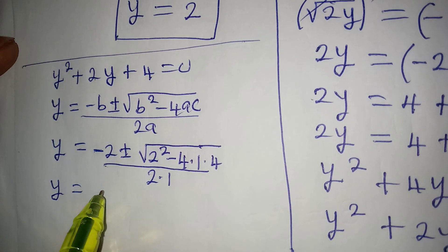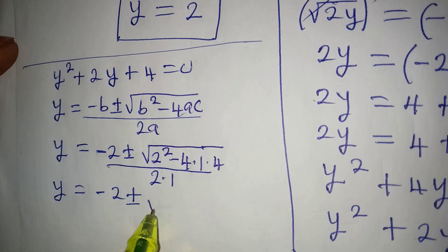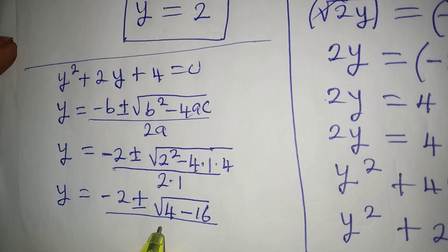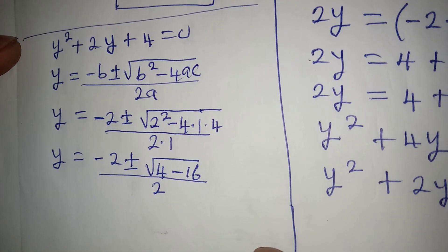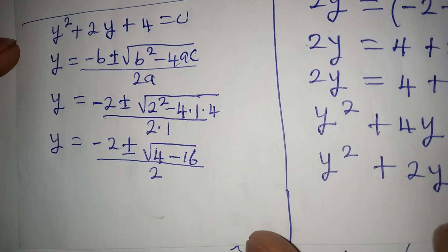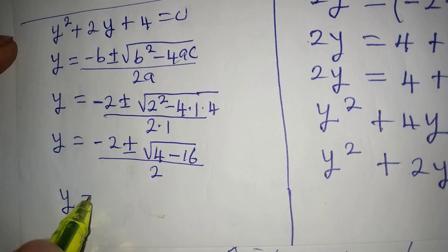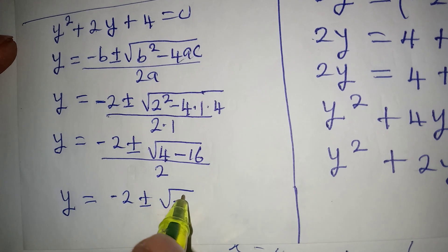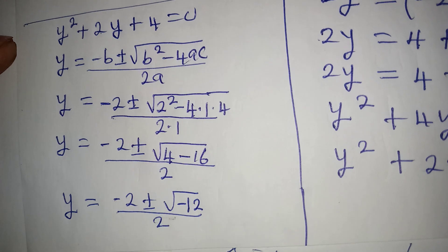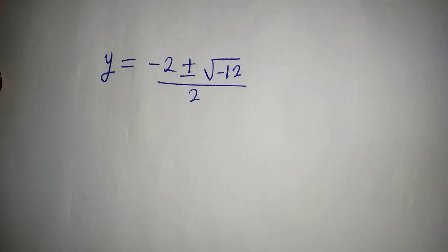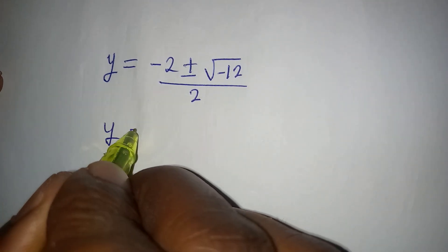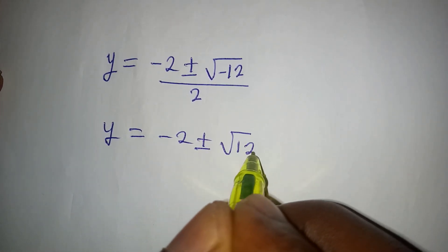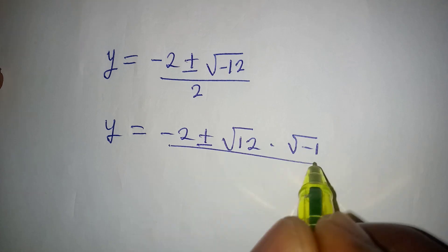Continuing, y equals minus 2 plus or minus square root of 4 minus 16, over 2. That gives y equals minus 2 plus or minus square root of negative 12, over 2. We can rewrite this as square root of 12 multiplied by square root of negative 1, over 2.